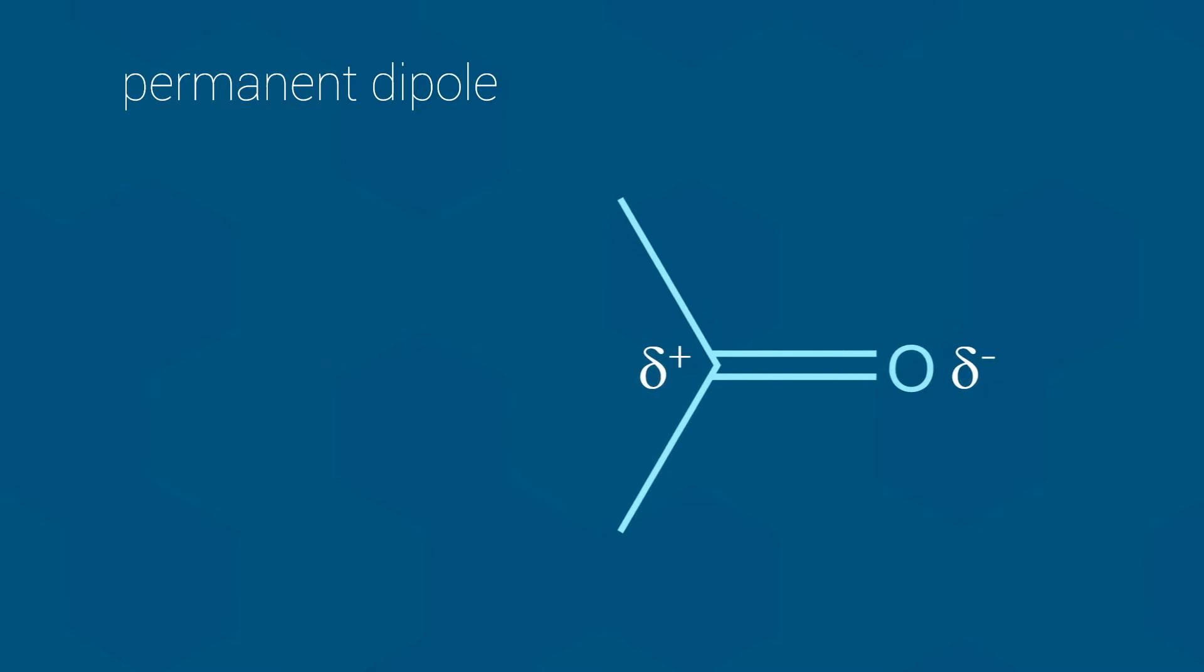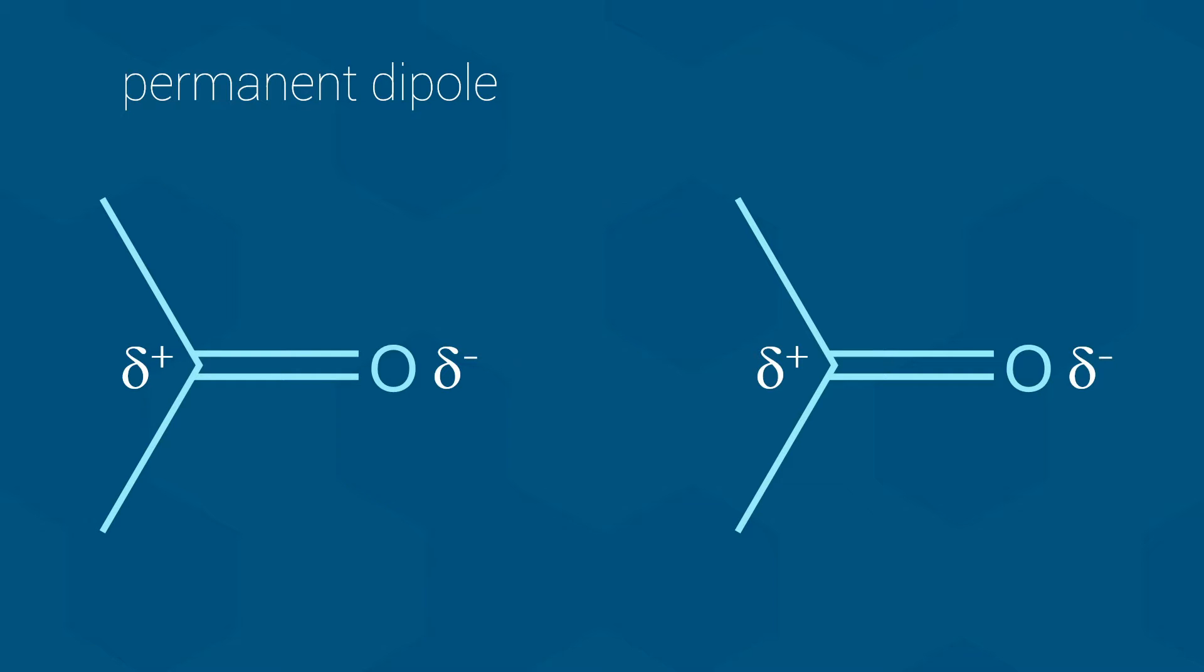So what happens if we have two acetone molecules? Well, the permanent dipoles act like tiny magnets, with the partial positive of one acetone attracting the partial negative of the other. This creates a rather strong attraction between the two molecules. Because this is two permanent dipoles interacting, we would classify this specific interaction as a permanent dipole to permanent dipole interaction.